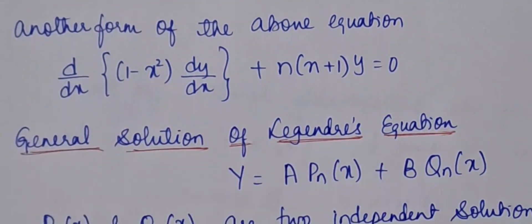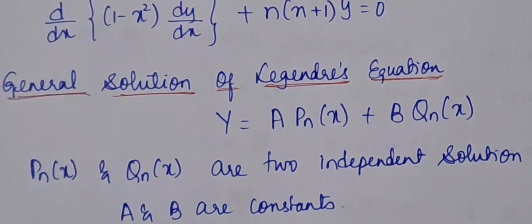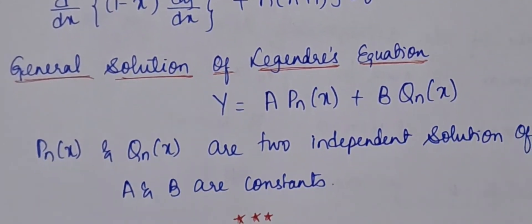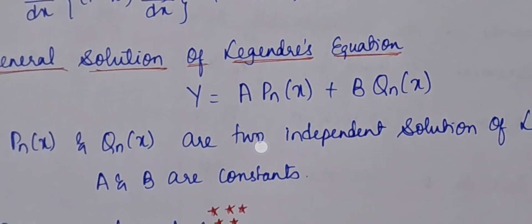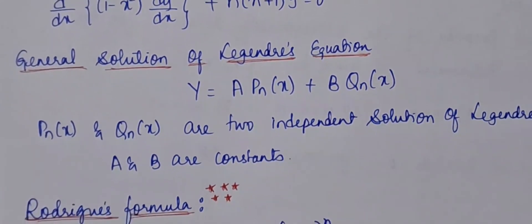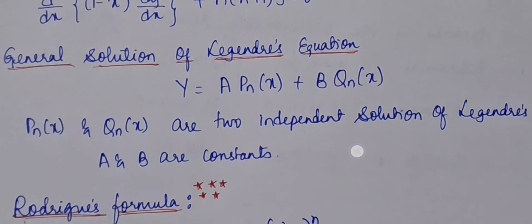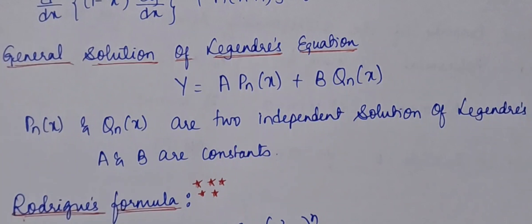The next important topic is the general solution of the Legendre equation. The general solution is: y = A·Pₙ(x) + B·Qₙ(x), where Pₙ(x) and Qₙ(x) are two independent solutions of Legendre's polynomial, and A and B are constants.